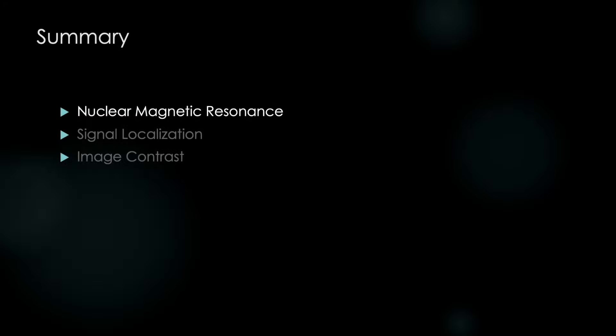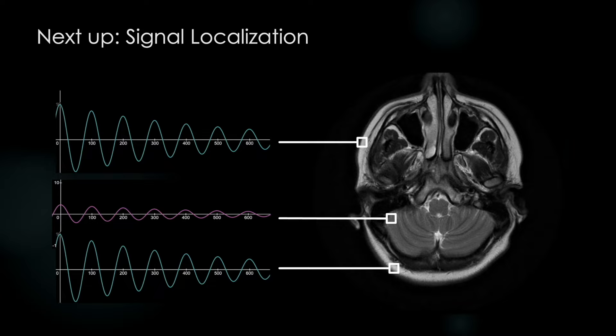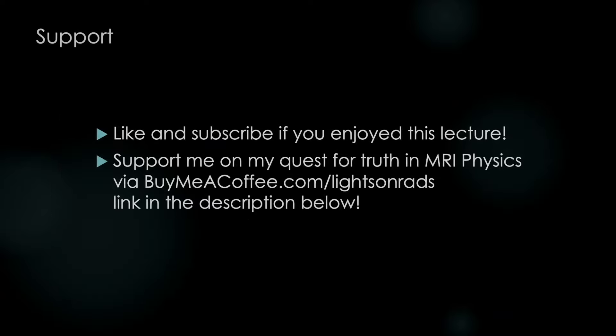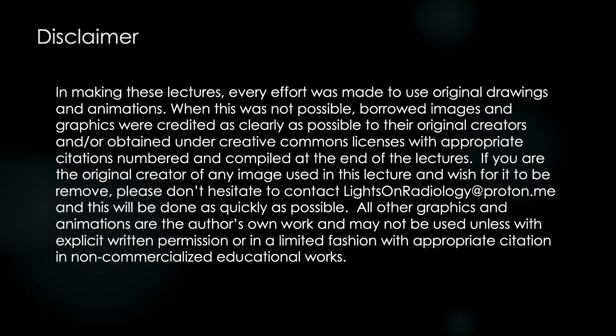So that's all. Congratulations on completing the first lecture. We talked in depth about nuclear magnetic resonance and what the machine sees. Next lecture, we'll talk about signal localization, all these crazy things we do in order to locate that signal coming from each individual voxel. If you liked this lecture, subscribe, like. If you want to support me in my quest to bring truth to MRI physics, consider donating using the links below. Otherwise, here are the images we used for the lecture. A small disclaimer, and that's it. We'll see you next time on Lights On Radiology.